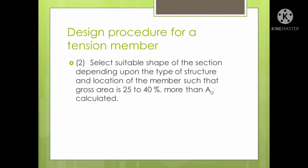Then, select a suitable shape of section depending upon the type of structure and location of the member, such that the gross area is 25 to 40% more than the AG calculated. This is done just to ensure safety, so that the selected section is able to carry the designated force Tu.